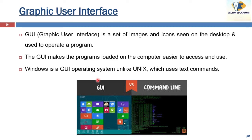GUI — Graphical User Interface — is a set of images and icons seen on the desktop and used to operate a program. The GUI makes programs loaded on the computer easier to access and use. Windows is a GUI operating system, unlike UNIX which is a text command interface. GUI has indeed made computers very user friendly; when we were young, we worked on CLI computers.